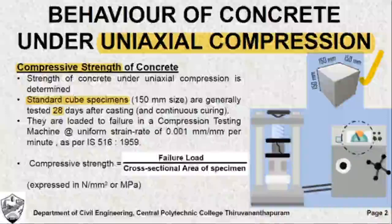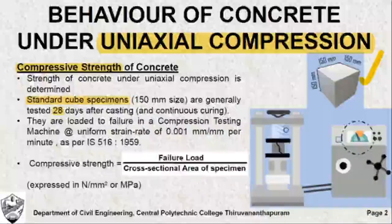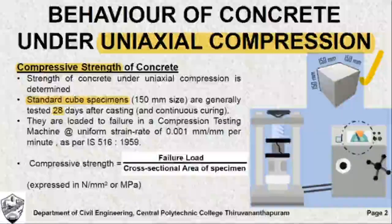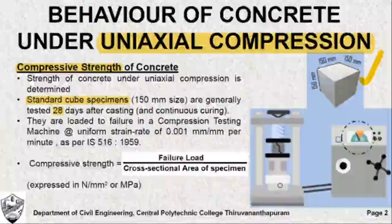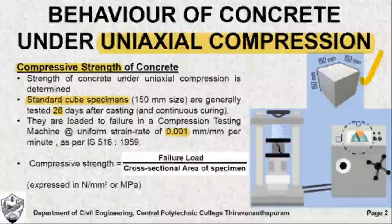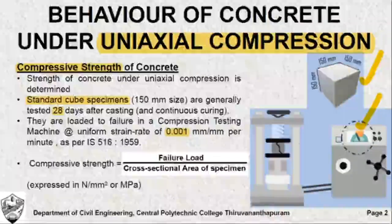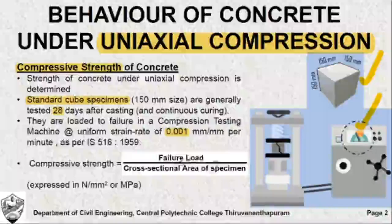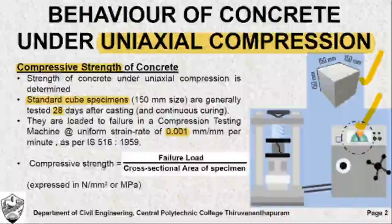Now, you keep the specimen between the platens of a compression testing machine and subject it to load in the vertical direction. Since the loading is performed only along one axis of the specimen, it is known as uniaxial compression. When you increase the load gradually, you will find that at some point of load the specimen fails and fractures. This failure load is noted and divided by the cross-sectional area of the specimen to obtain the compressive strength of the concrete specimen.